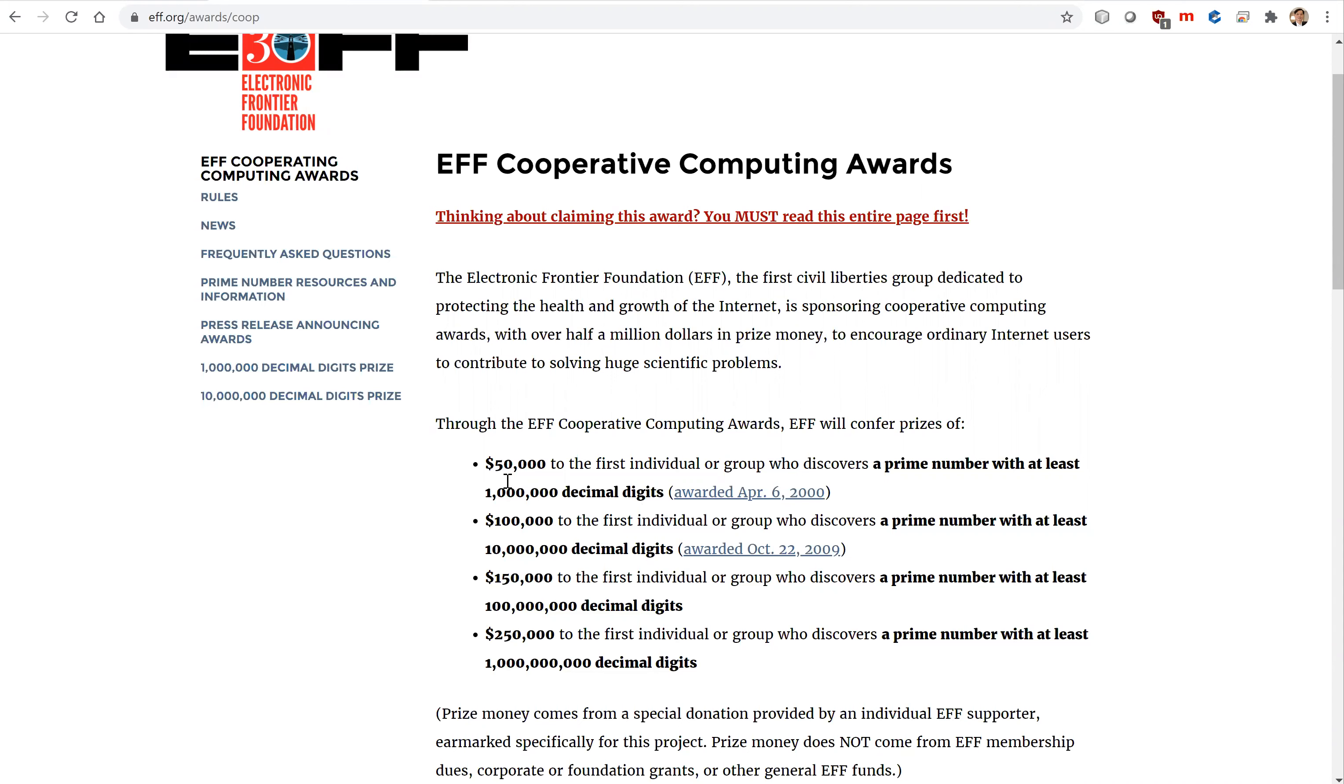Now the previous two awards have already been claimed, but this award has not been claimed. This is for people who discover a prime number with at least 100 million decimal digits, and the award is $150,000.